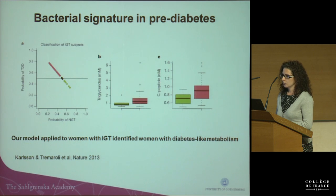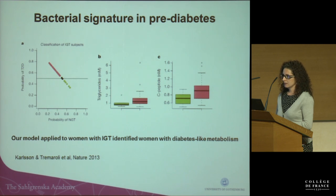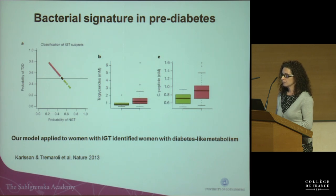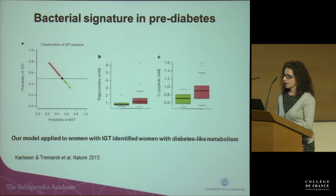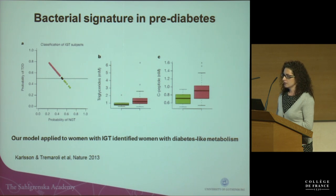We then applied this model to a group of about 45 impaired glucose tolerance subjects. Impaired glucose tolerance is often a pre-diabetes state. Subjects classified by the model as type 2 diabetics also had dyslipidemia and increased serum C-peptide, which is a sign of abnormal insulin secretion. So our model indicated that IGT women — pre-diabetes — could be identified based on the gut microbiota profile, detecting diabetes-like metabolism before type 2 diabetes appeared.